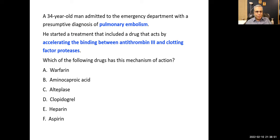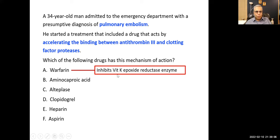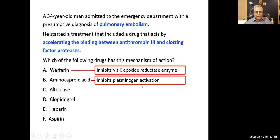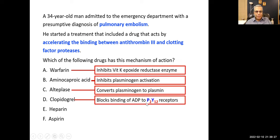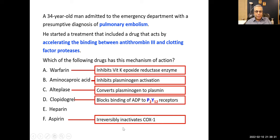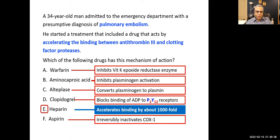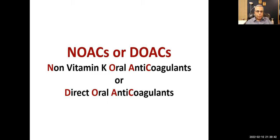Question: Which drug binds to antithrombin-3 and increases its activity 1000-fold or more? The answer is E — heparin. Warfarin inhibits vitamin K epoxide reductase enzyme. Aminocaproic acid inhibits plasminogen activation and is used as an antidote for alteplase. Alteplase converts plasminogen to plasmin. Clopidogrel blocks binding of ADP to P2Y12 receptors. Aspirin irreversibly inactivates a serine residue on the COX-1 enzyme.